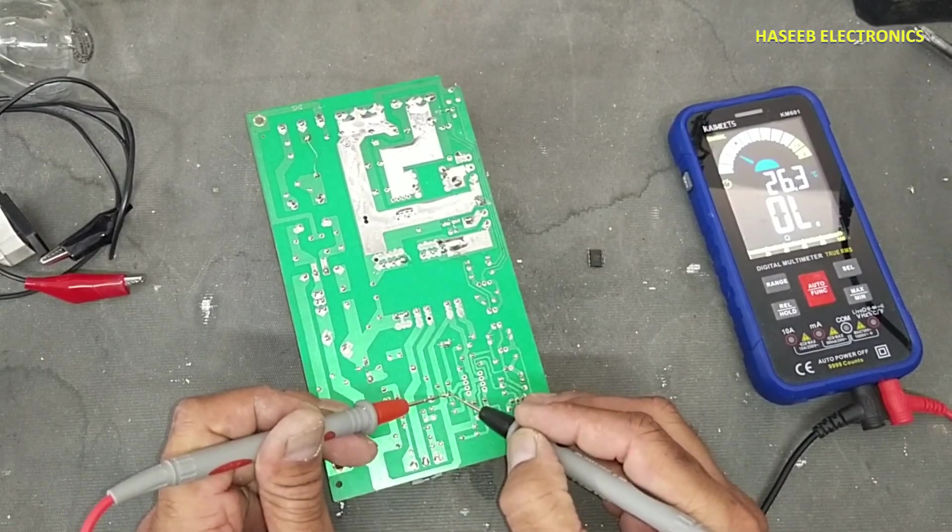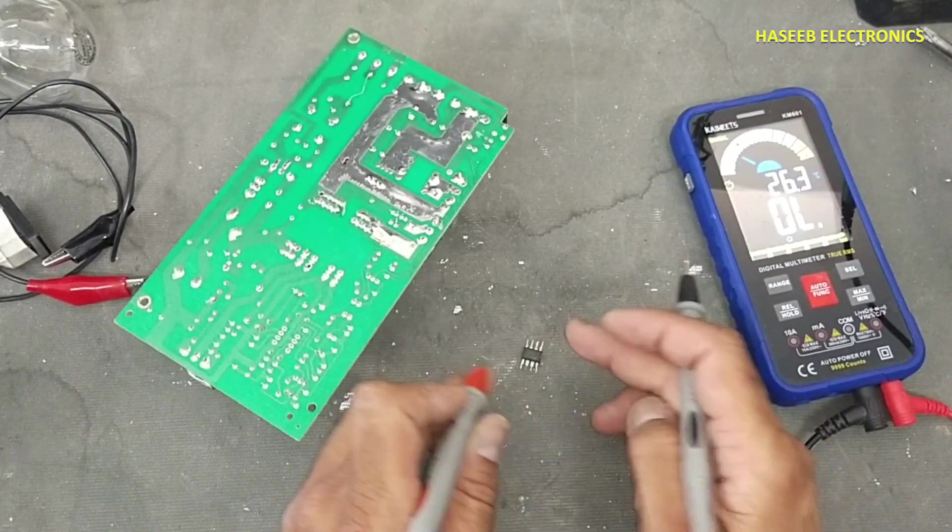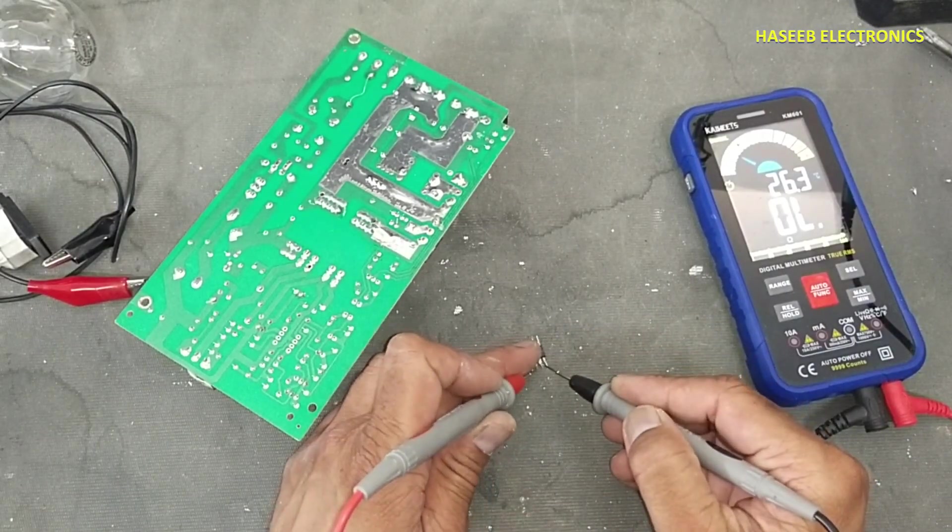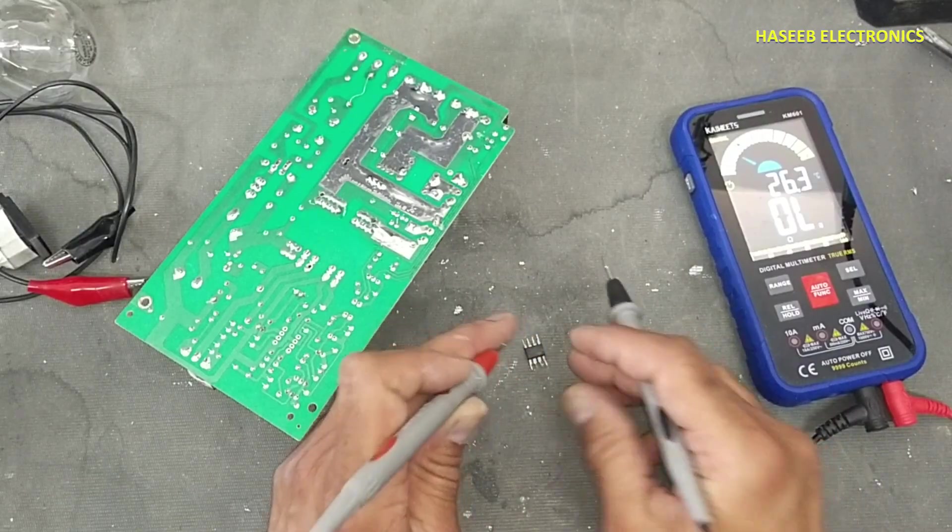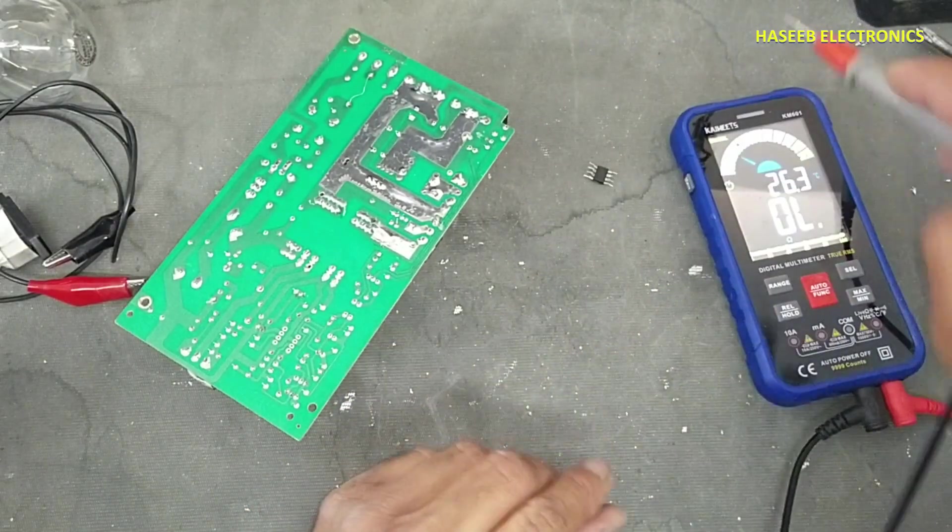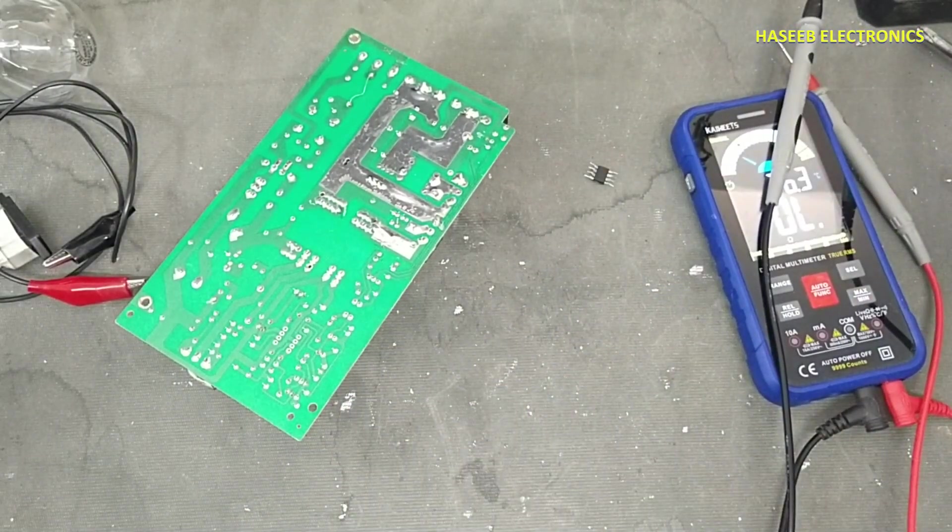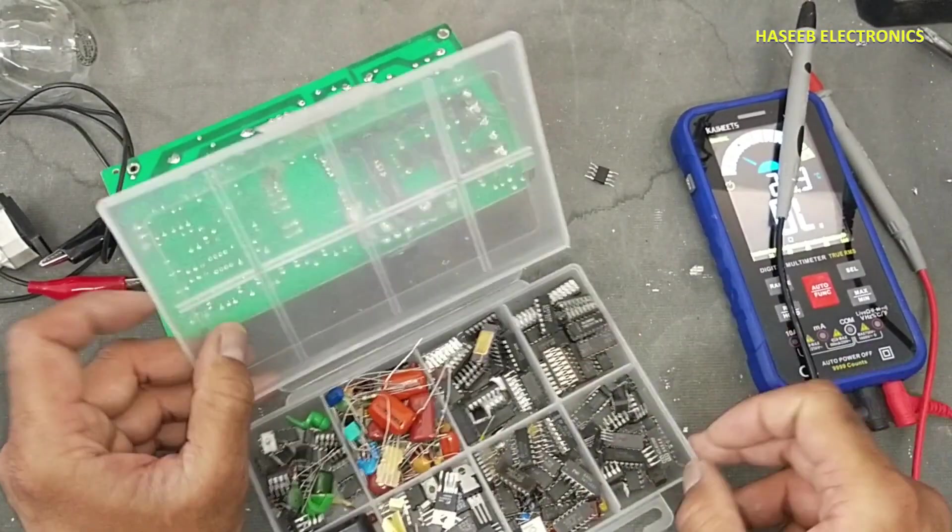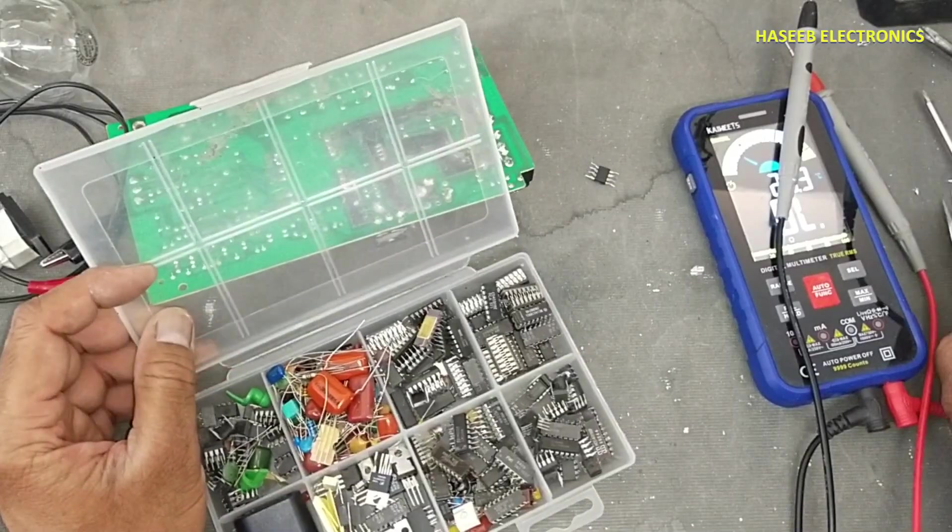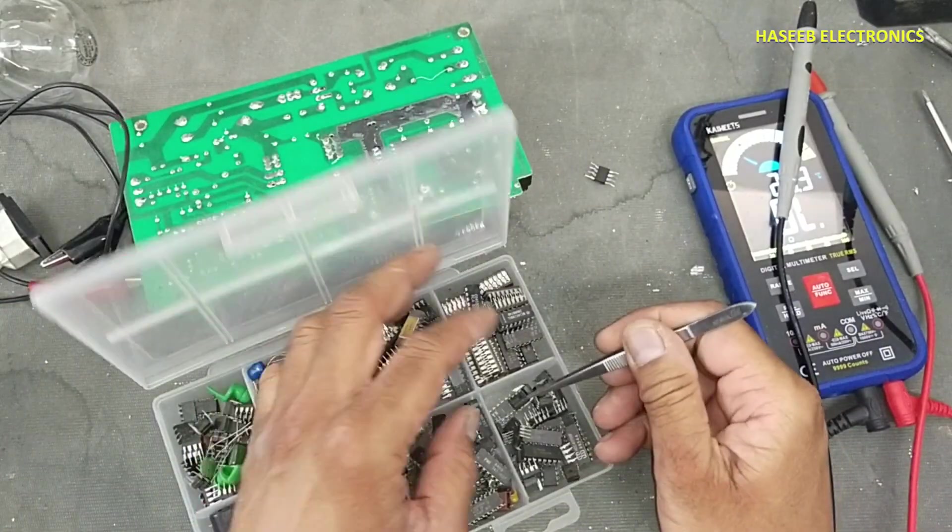Yes, now there is no short circuit. Now if we check this IC pin number five and seven, so this IC is short circuit internally. So this IC is damaged. I will replace this IC now.